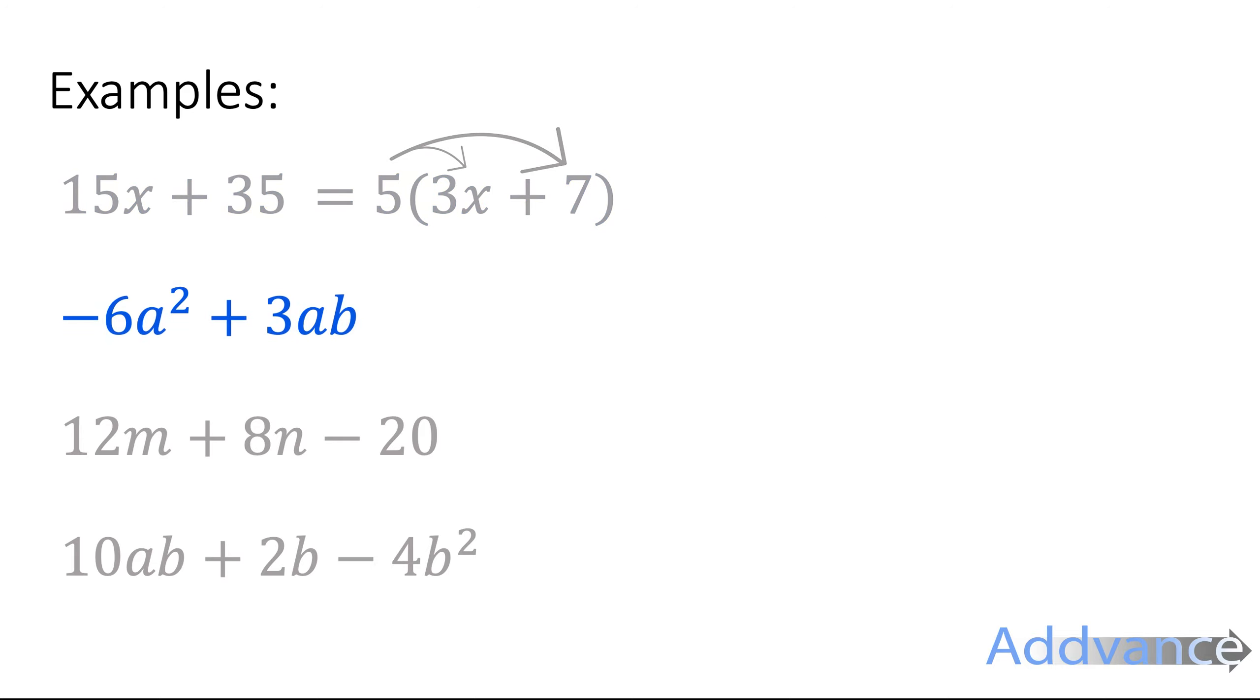Okay, next one: minus 6a squared plus 3ab. Looking for something that divides minus 6a squared and also divides 3ab, that will be minus 3a. The 3 comes from dividing the 6 and the 3, that's the number that divides the 6 and the 3. The a divides 6a squared and it also divides ab. I've made it negative because the first term is negative.